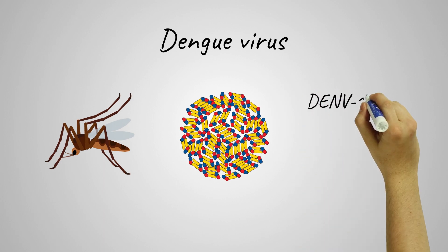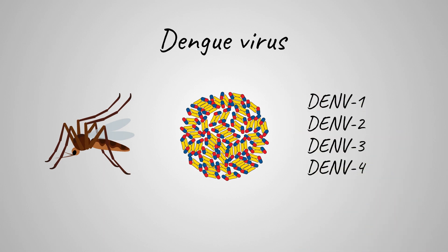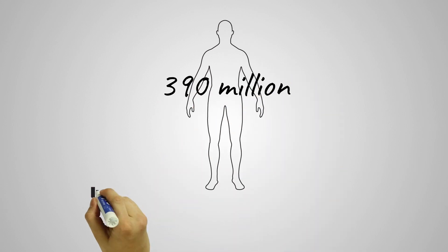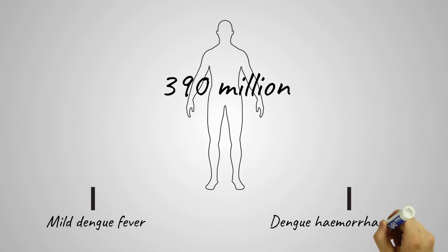Dengue virus is a mosquito-borne pathogen with four different serotypes. Dengue infects around 390 million people globally per year and can result in life-threatening conditions. There is currently no antiviral.